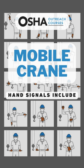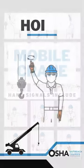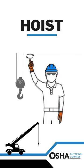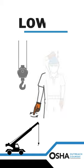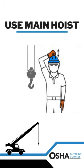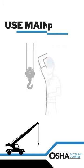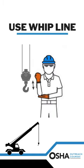Mobile crane hand signals include: Hoist. Lower. Use main hoist. Use whip line.